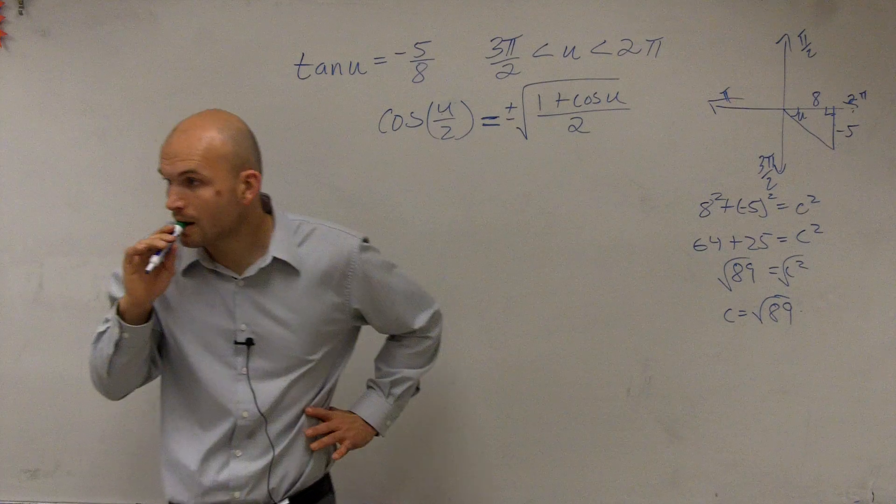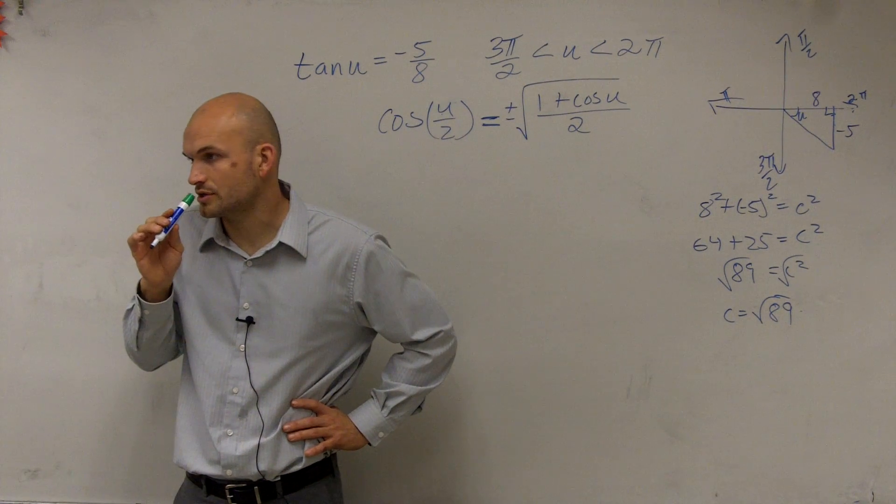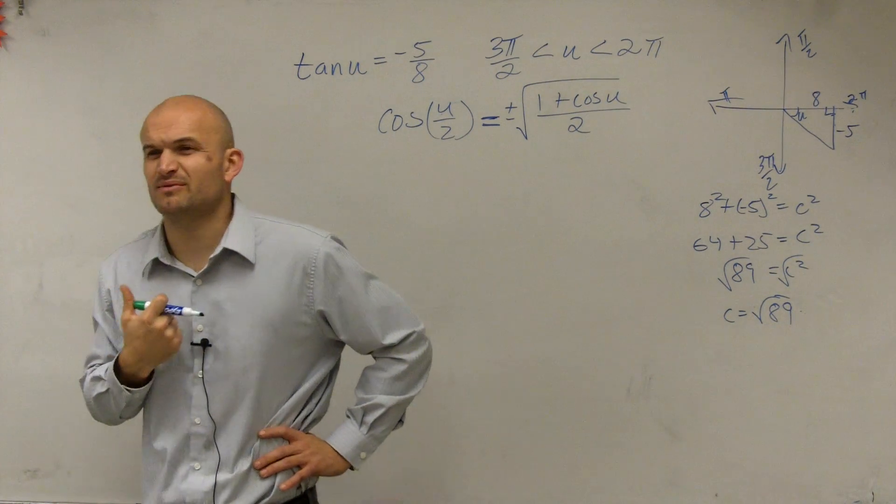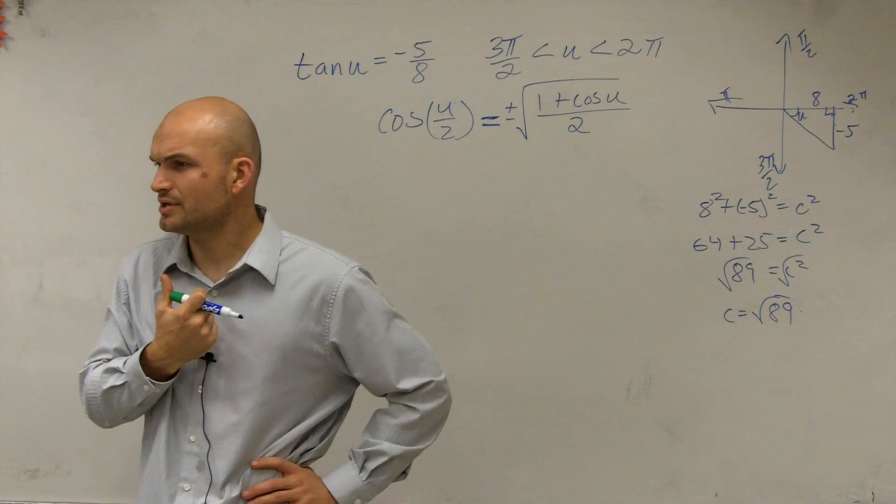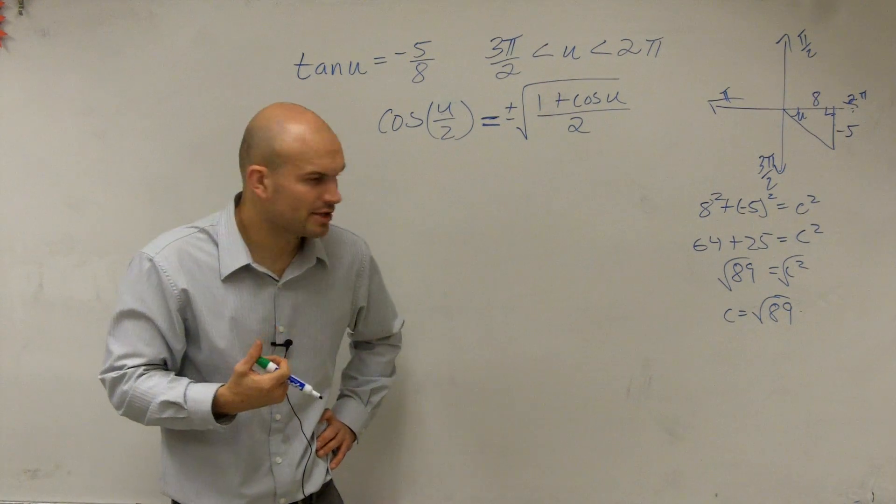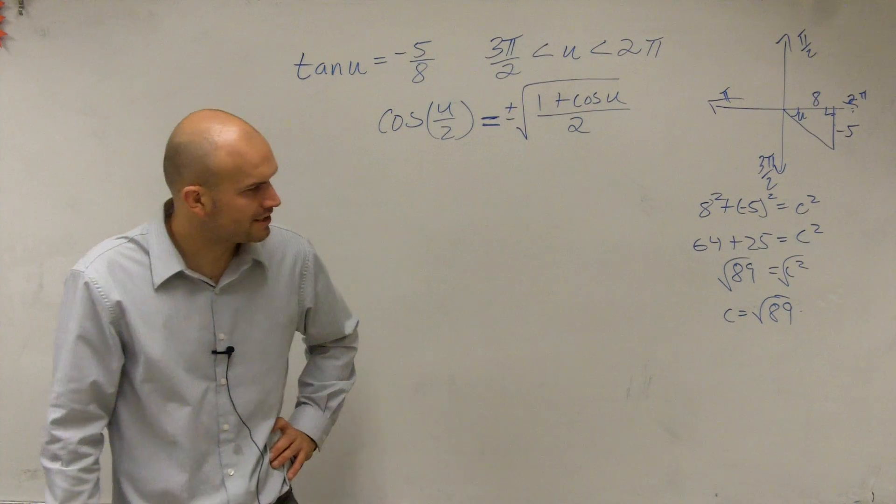In what case is the hypotenuse 1 again? When we're dealing with points on the unit circle. Hypotenuse is always going to be 1. So now, we want to look at this and say, can we simplify this any further? Can we simplify the radical? I think we're pretty good. Square root of 89. I don't think we can simplify that as any other term.